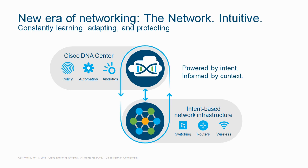Cisco DNA has that functionality, but to power Cisco DNA, we need some new intelligence. That's the reason Cisco introduced 9K switches. The 9K platform is built to provide integrated security, mobility, IoT, and cloud readiness. All these platforms can be integrated within the single 9K platform.